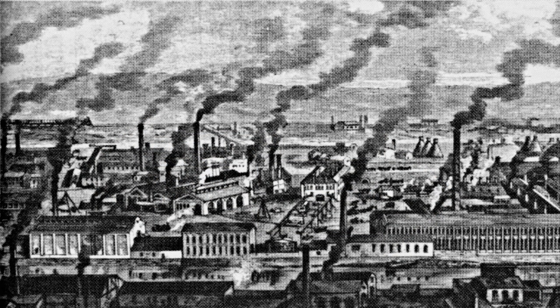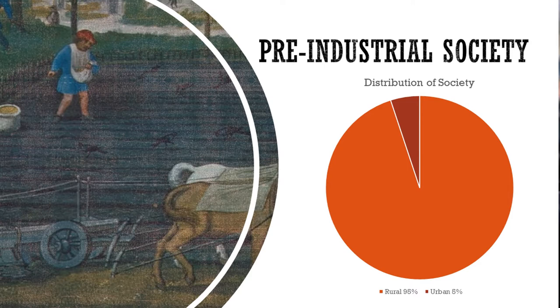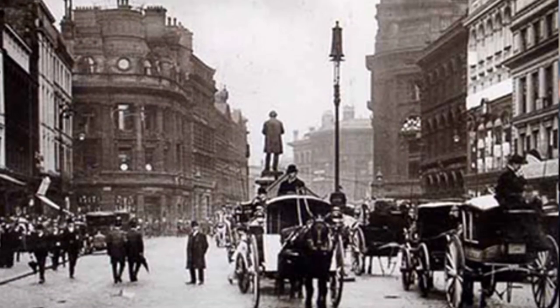The Industrial Revolution also brought about a fundamental shift in where we live. Prior to it, the vast majority of people lived in rural locations — we were mostly farmers, and farming wasn't all that efficient. However, the Industrial Revolution brought increased efficiency and industrial processes to farming techniques, and at the same time reduced the number of people needed to farm. People began to move from the countryside into the city in search of work, a process that began in the late 1700s and has only accelerated as the Industrial Revolution spread around the world.